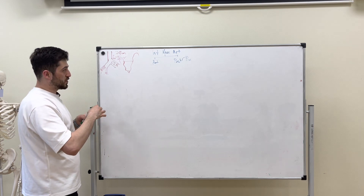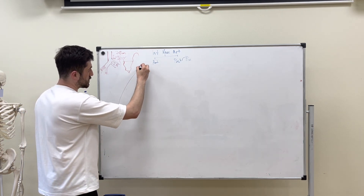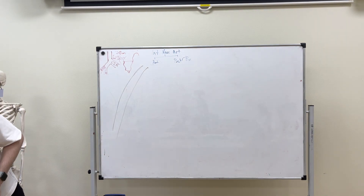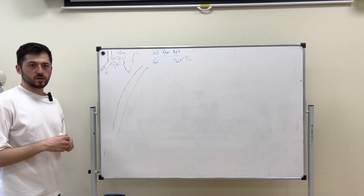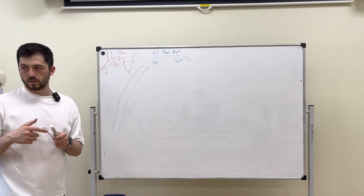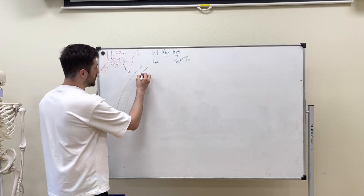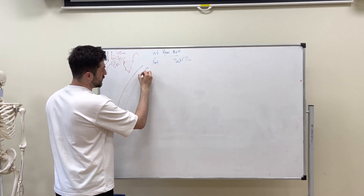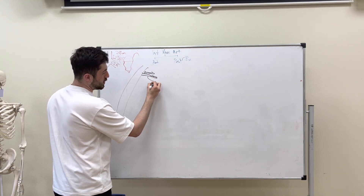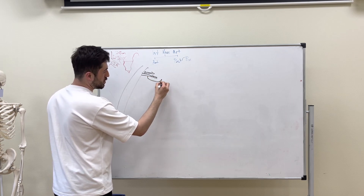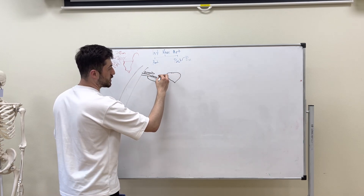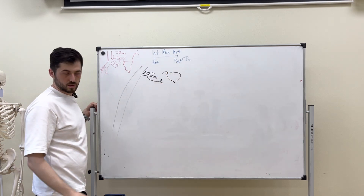The first branch of the internal iliac artery is the arteria umbilicalis. In the adult body, it is obliterated and becomes the medial umbilical fold ligament. However, in the beginning portion, before obliteration, it gives off one branch: the arteria vesicalis superior. The next branch from the umbilical artery is arteria vesicalis superior.